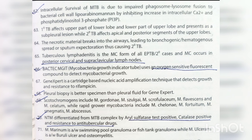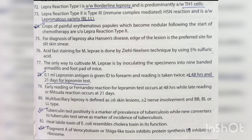Scotochromogens include M. gordonae, M. szulgai, M. scrofulaceum, M. flavescens, and M. psyllatum. Rapid growers include M. chelonae, M. fortuitum, M. smegmatis, and M. abscessus. NTM are differentiated from MTB complex by arylsulfatase test positive, catalase positive, and resistance to anti-tubercular drugs. Mycobacterium marinum is associated with swimming pool granuloma or fish tank granuloma, while Mycobacterium ulcerans is associated with Buruli ulcer and osteomyelitis.